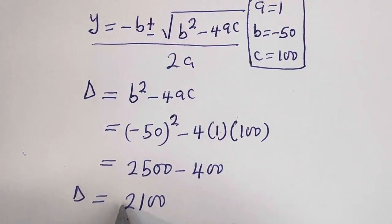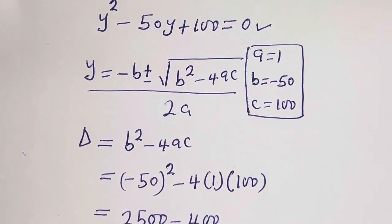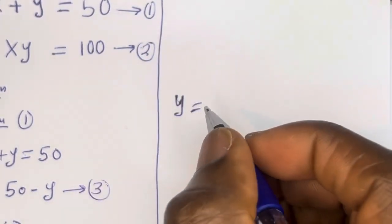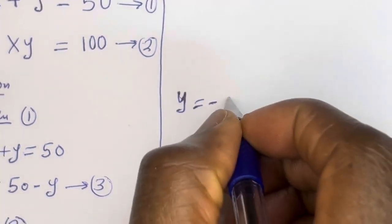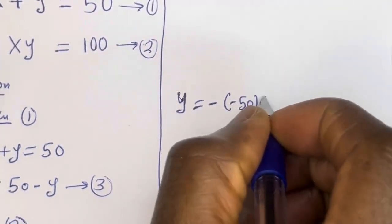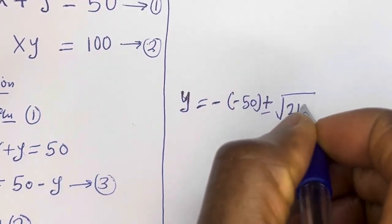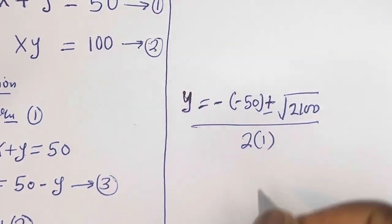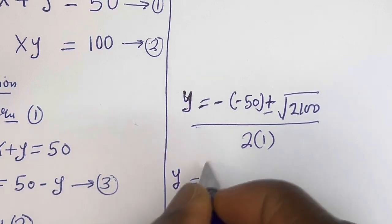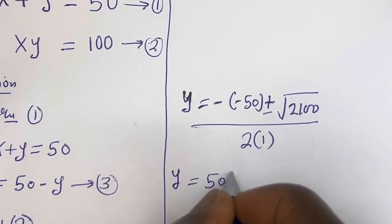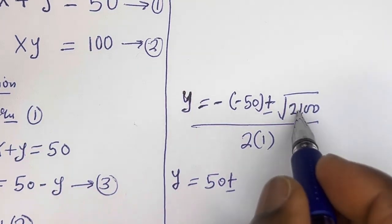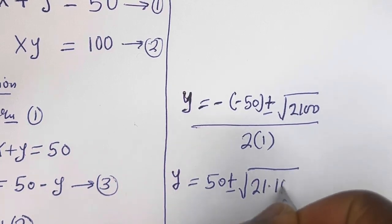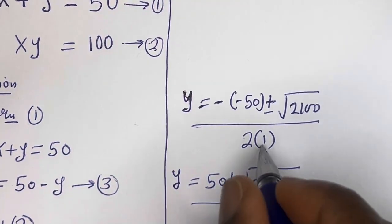Let's substitute this into the formula. We have y is equal to minus (minus 50) plus or minus square root of 2100, over 2 multiplied by 1. The square root of 2100 can be written as square root of 21 multiplied by 100, over 2.